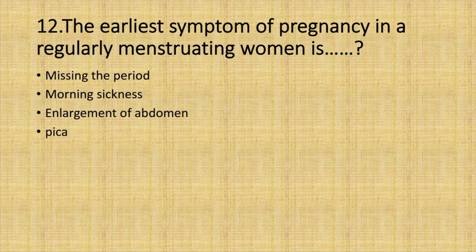The earliest symptom of pregnancy in a regularly menstruating woman is: Option A. Missing the period. Option B. Morning sickness. Option C. Enlargement of abdomen. Option D. Pica. Answer: Option A. Missing the period.